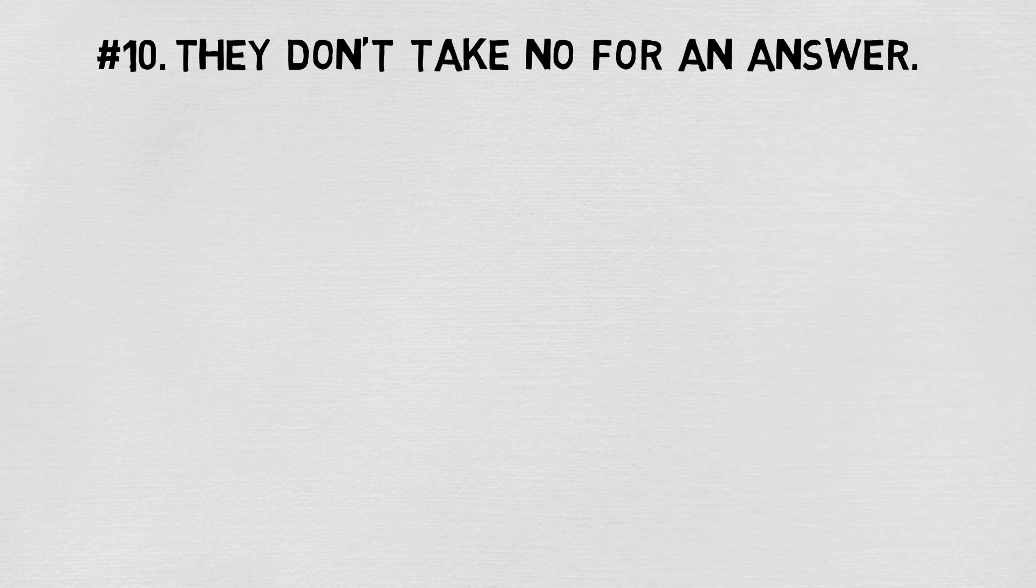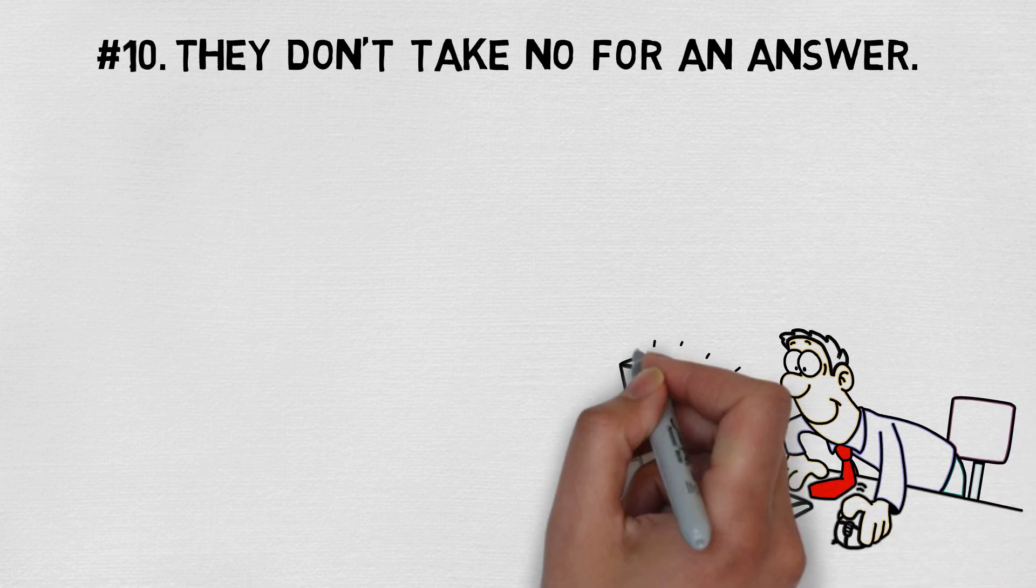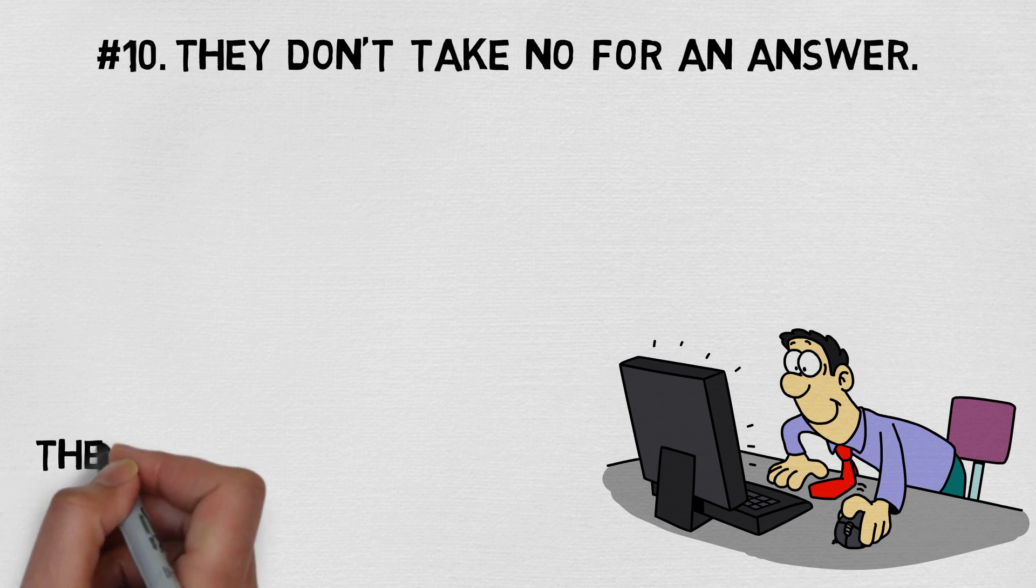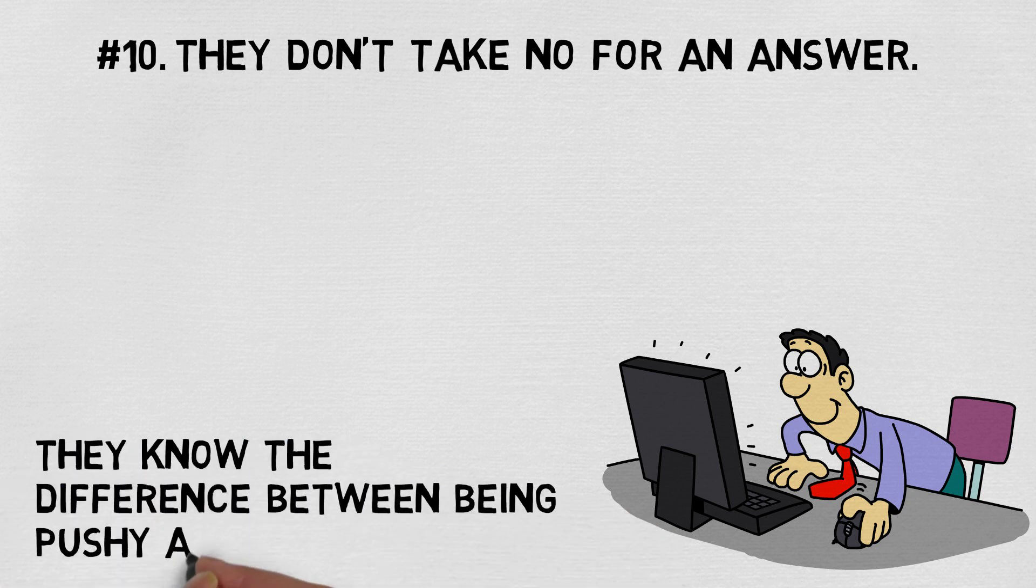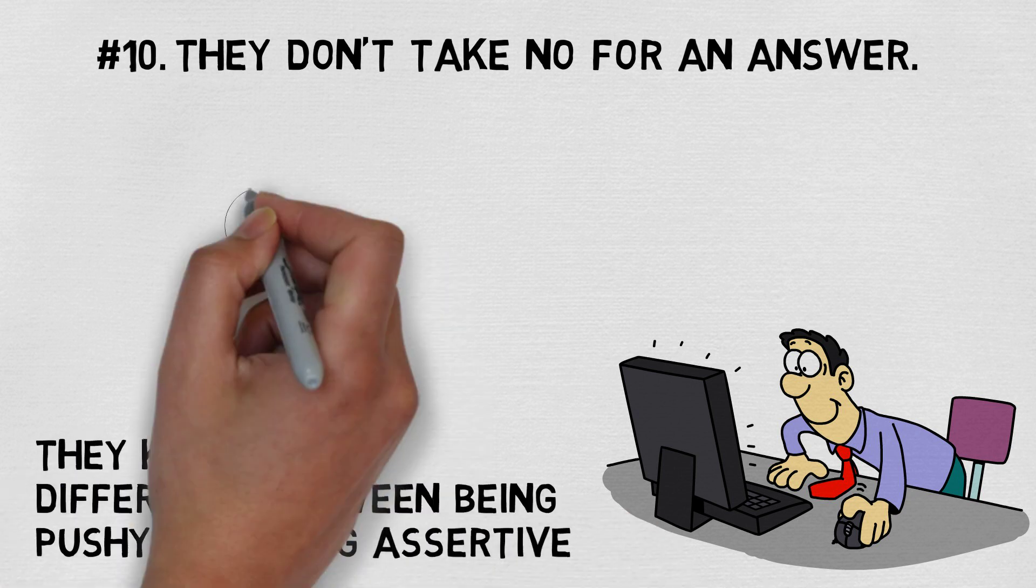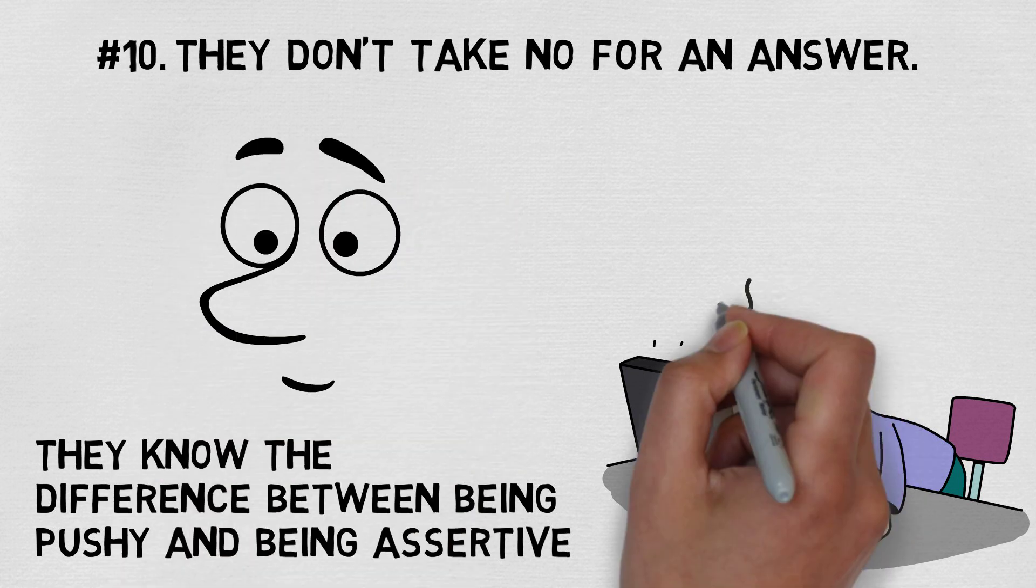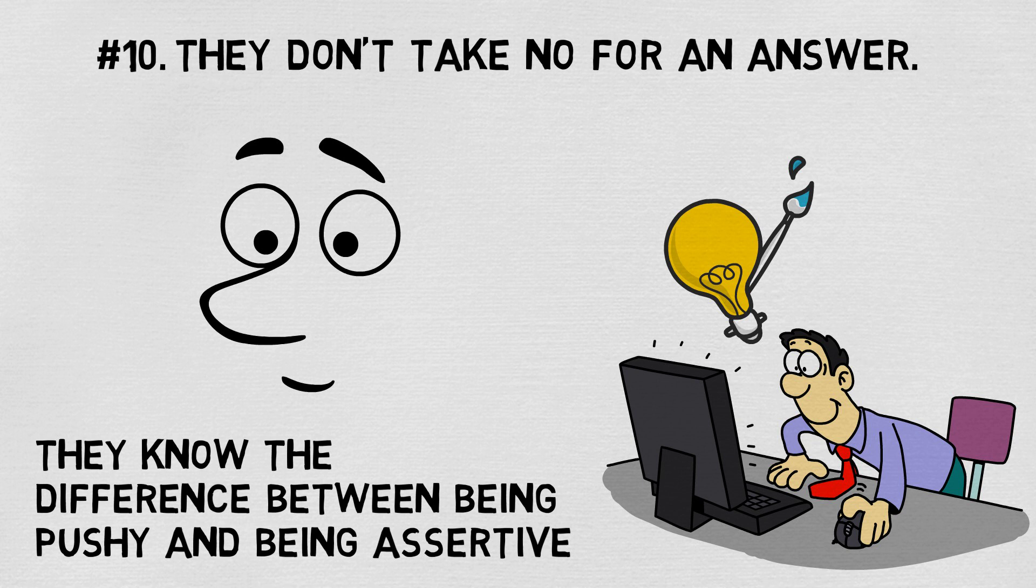Number ten, they don't take no for an answer. If you see someone who is persistent in reaching their goals, you are looking straight at a sign of an intelligent person. These people don't give up without a fight. They do know the difference between being pushy and being assertive. So don't confuse them for the belligerent people who scream to get their way. They will be crafty and direct in their approach, without being rude.